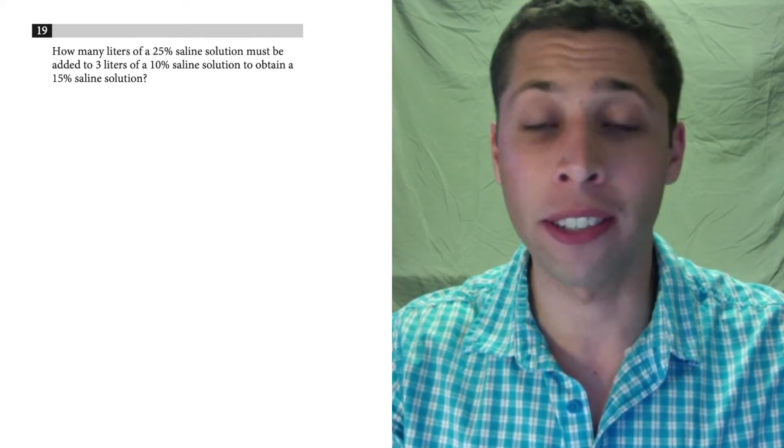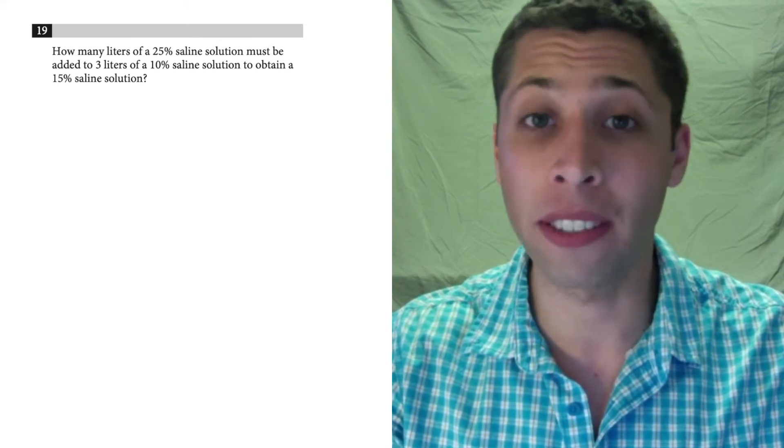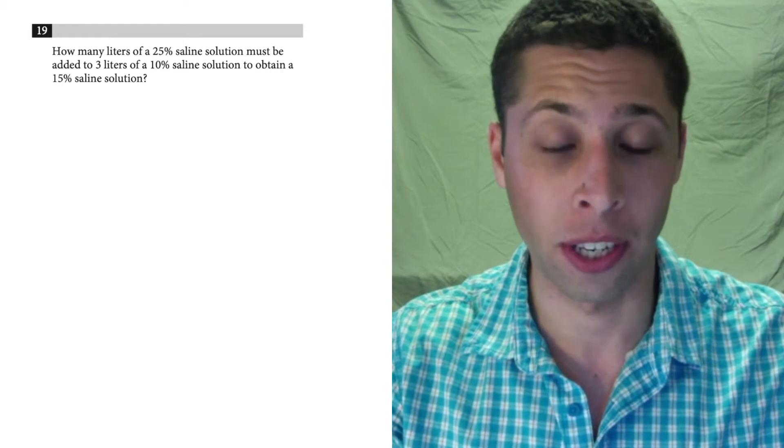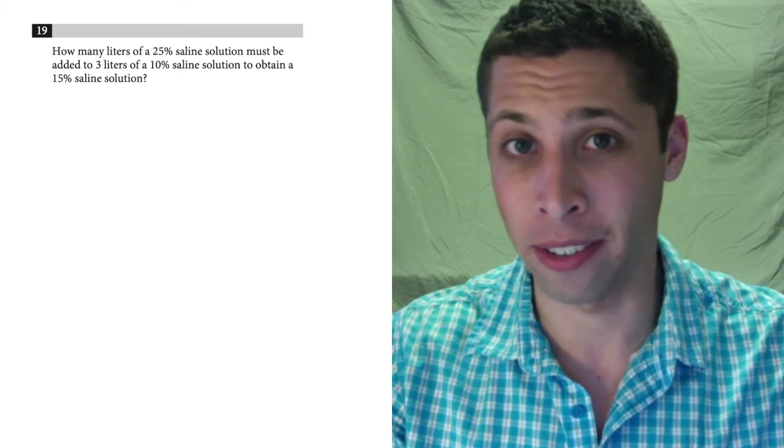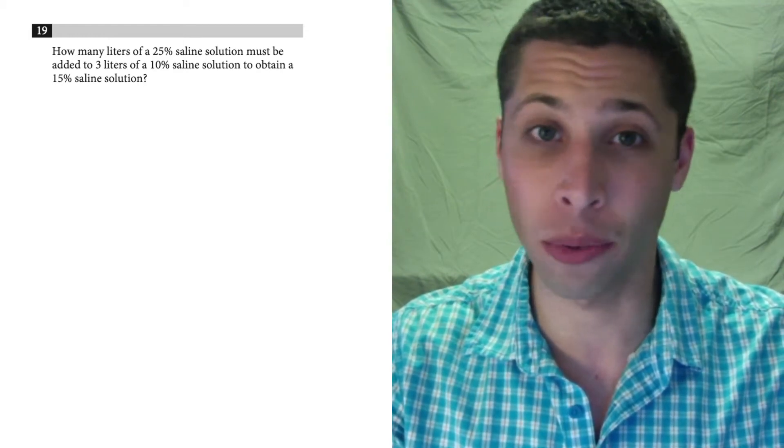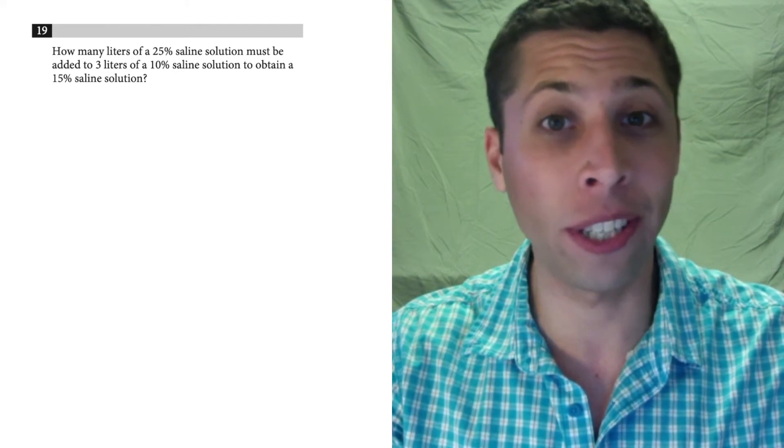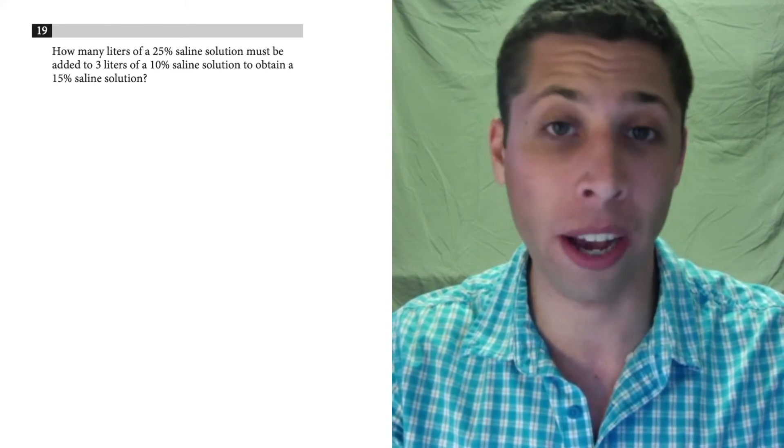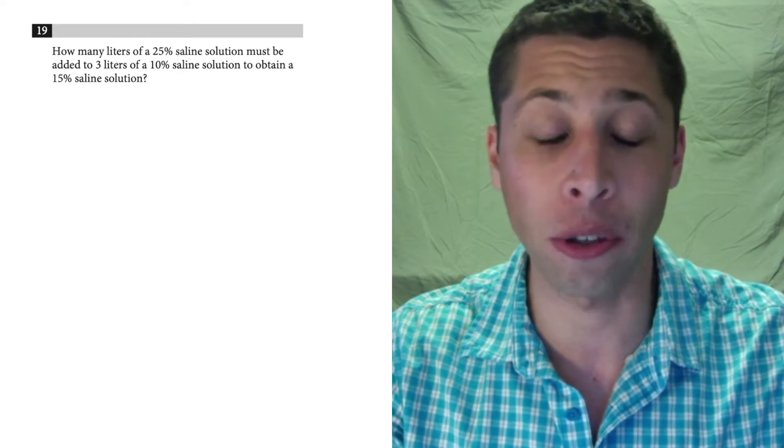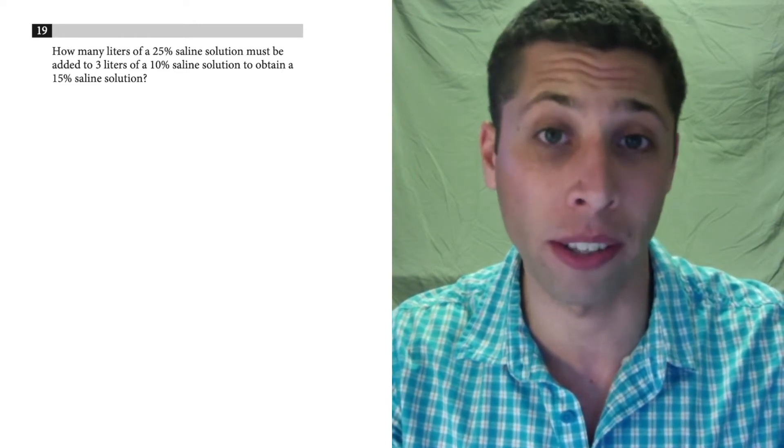Number 19 is a good example of a question that you should probably skip, at least at first. See what number 20 is all about, because number 19 is just weird and you could easily get too slowed down by this question to finish the section. You'd be leaving behind the 10 points from question number 20.